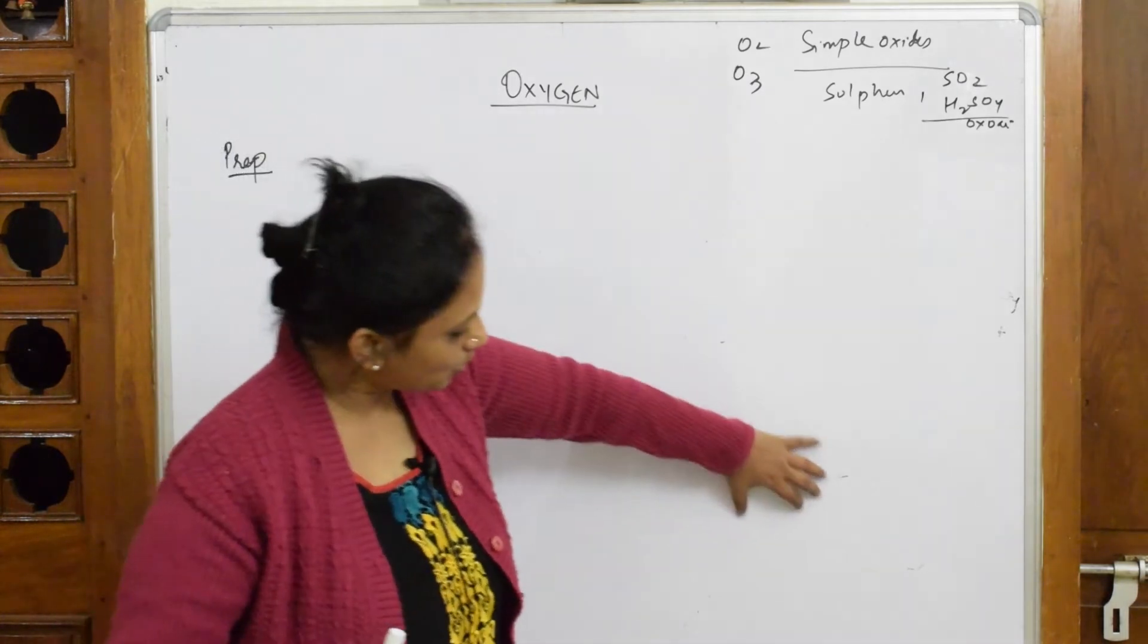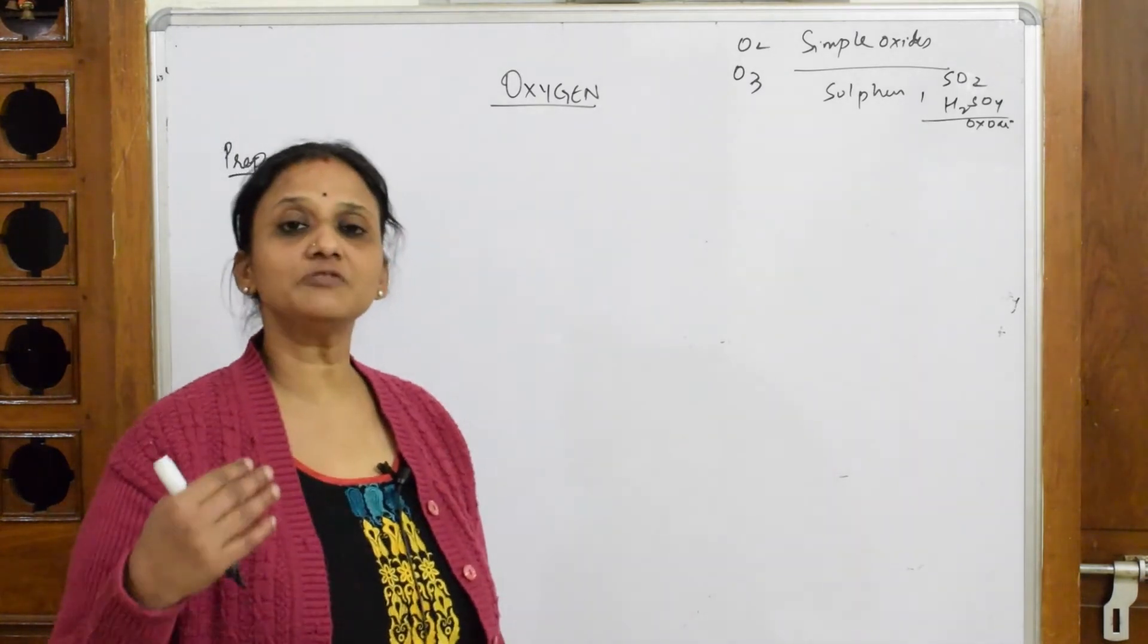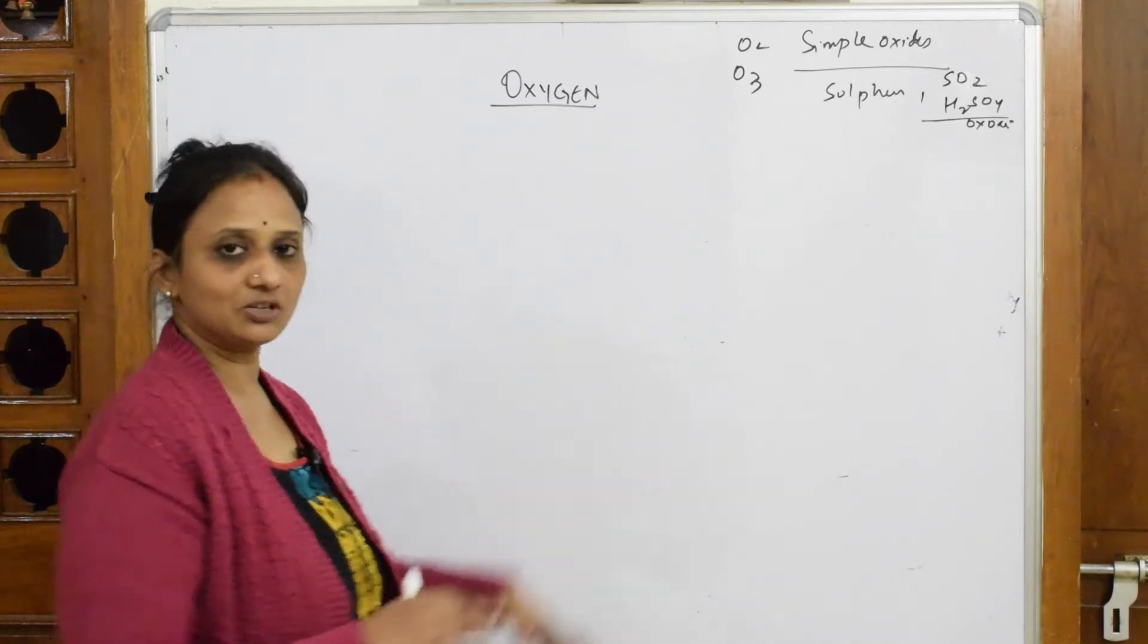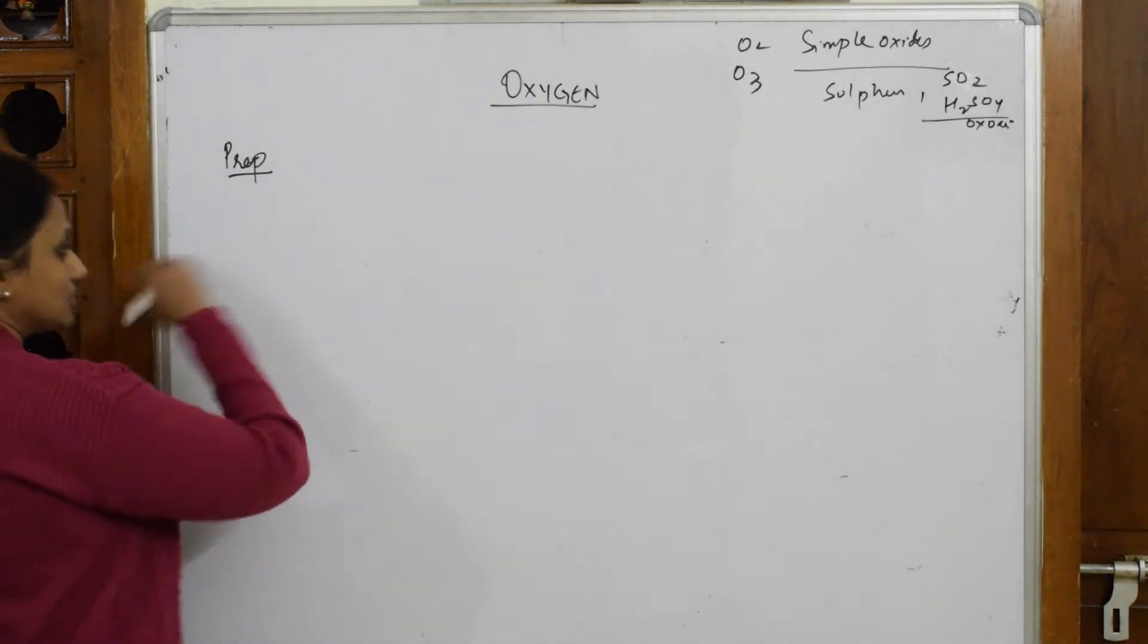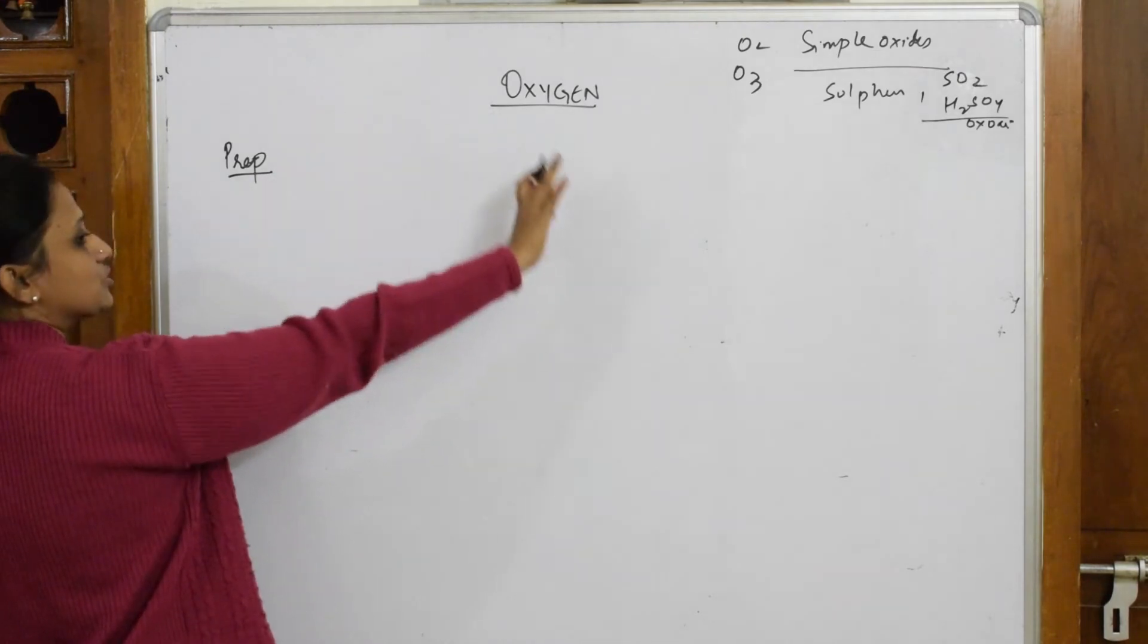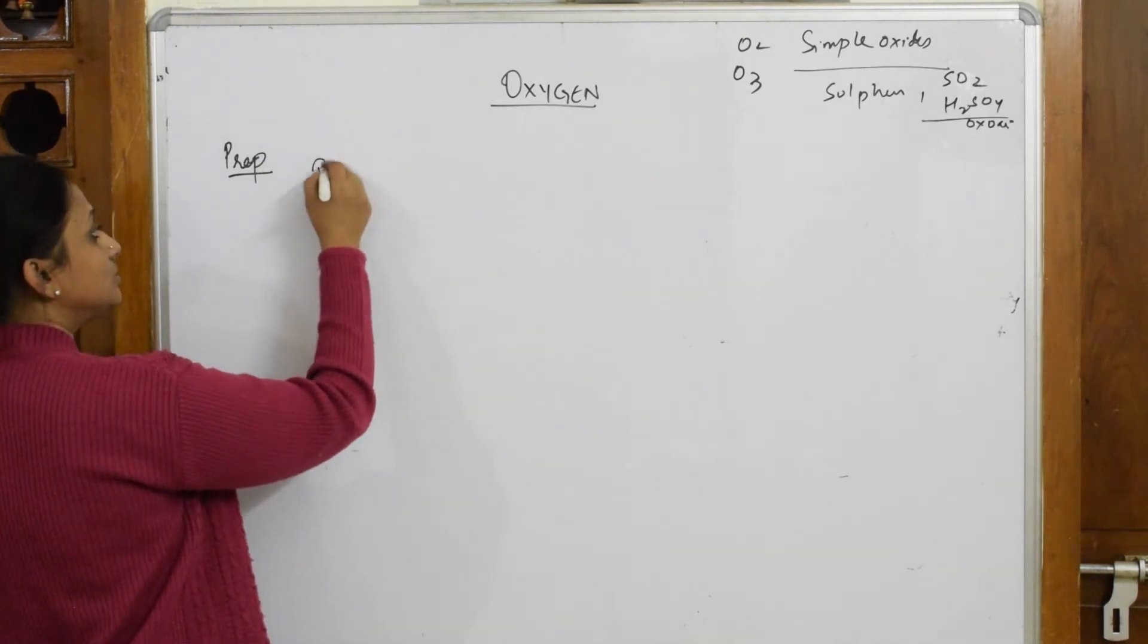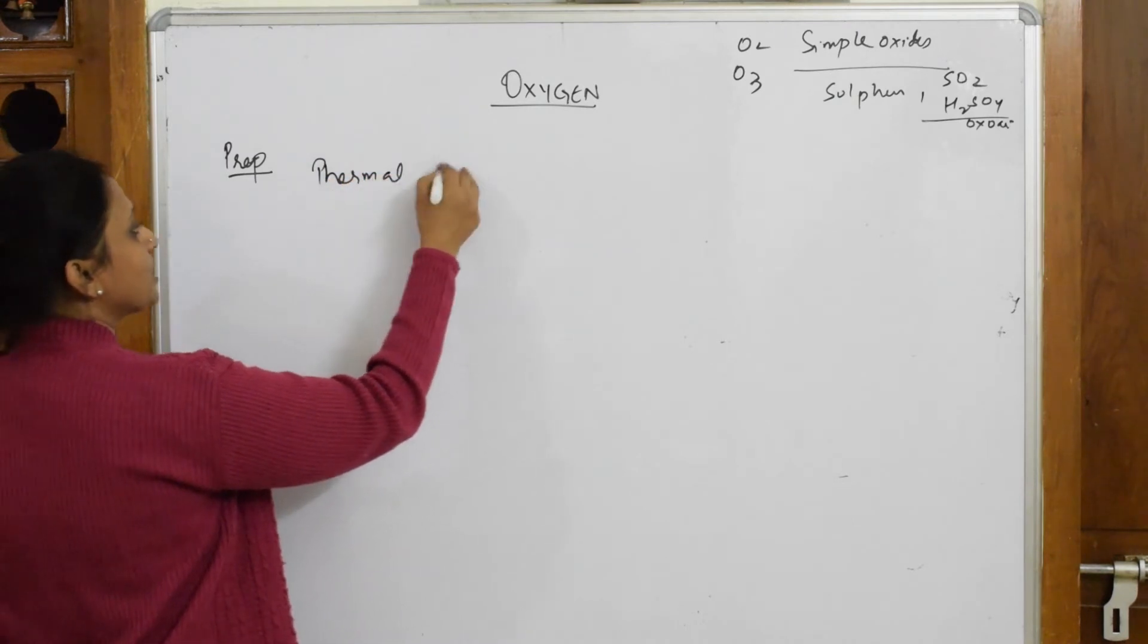Now at the lower end of the electrochemical series, you have a list of metal oxides. Let us write the metal oxides which we're going to study. So what is the question? First, I have to understand the concept of electrochemical series, then I have to come back to the thermal decomposition of them.